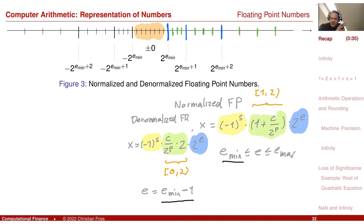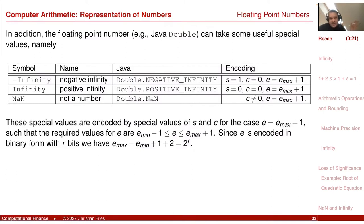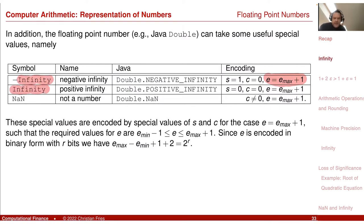If the exponent e changes to e_min minus one, the computer changes the formula slightly and we can represent all the numbers. There was a third set of numbers — special values — for the case where e equals e_max plus one. So the whole range for e is e_min minus one to e_max plus one. These were the special values: minus infinity and plus infinity. Take a look at these encodings: c equals zero, e equals e_max plus one.